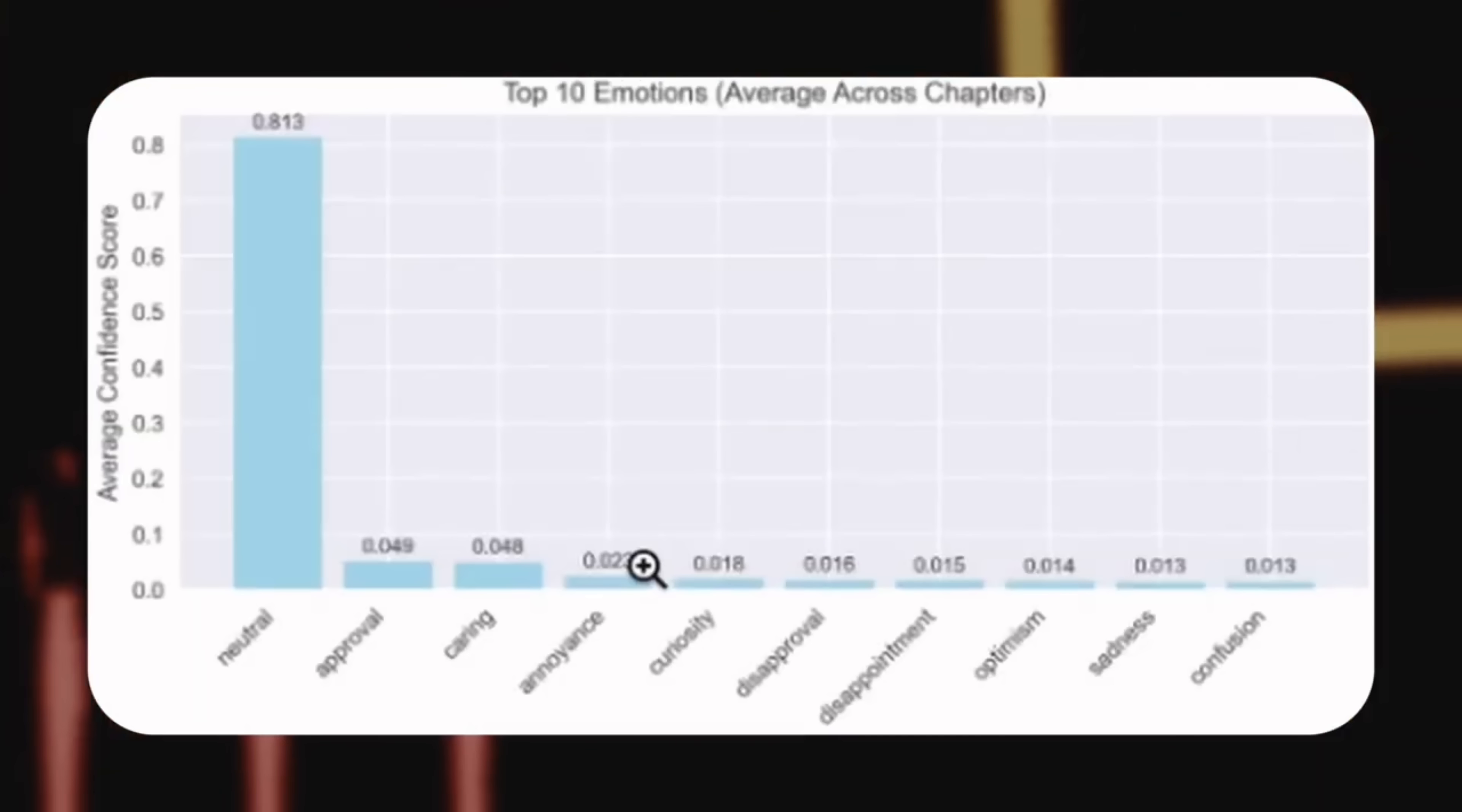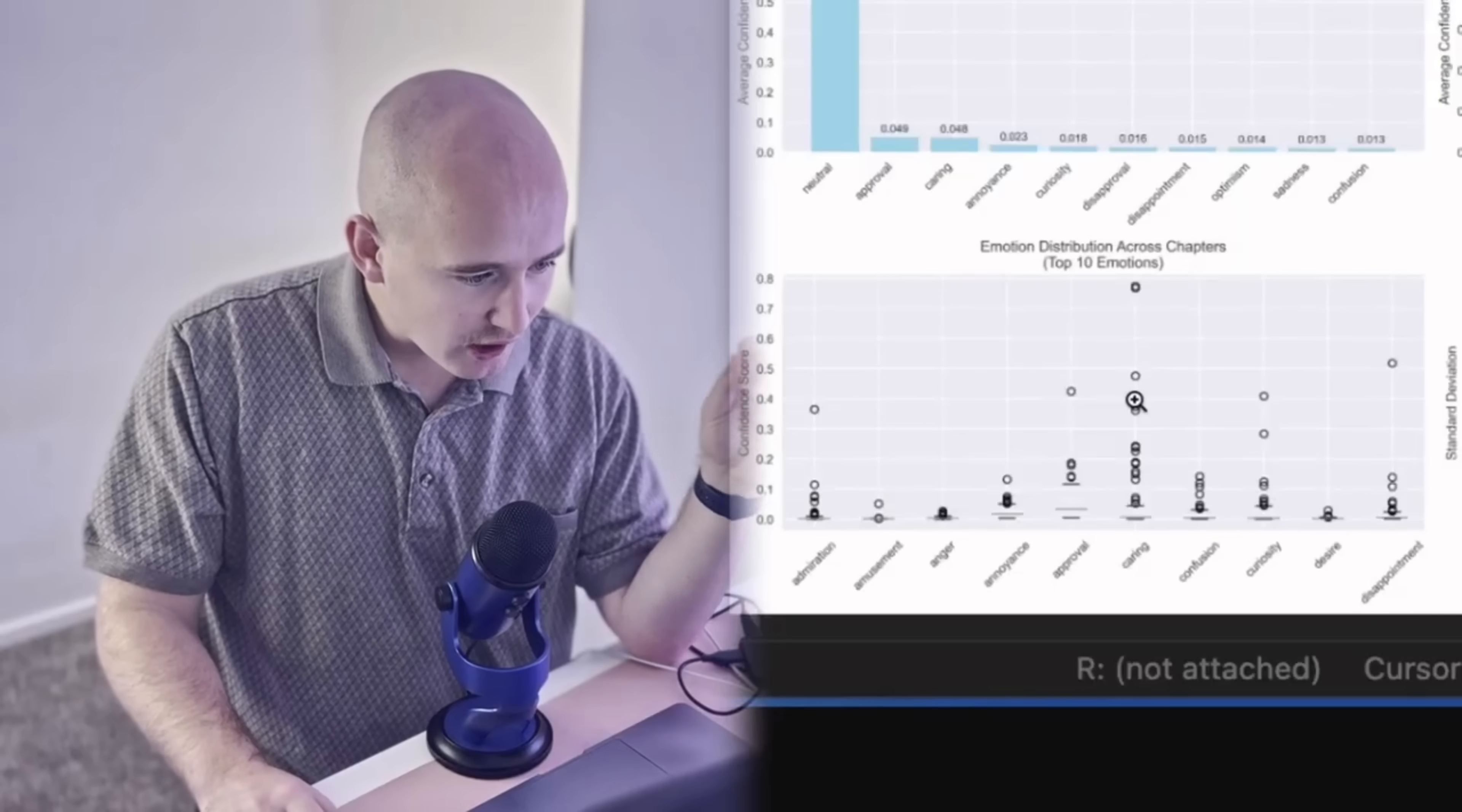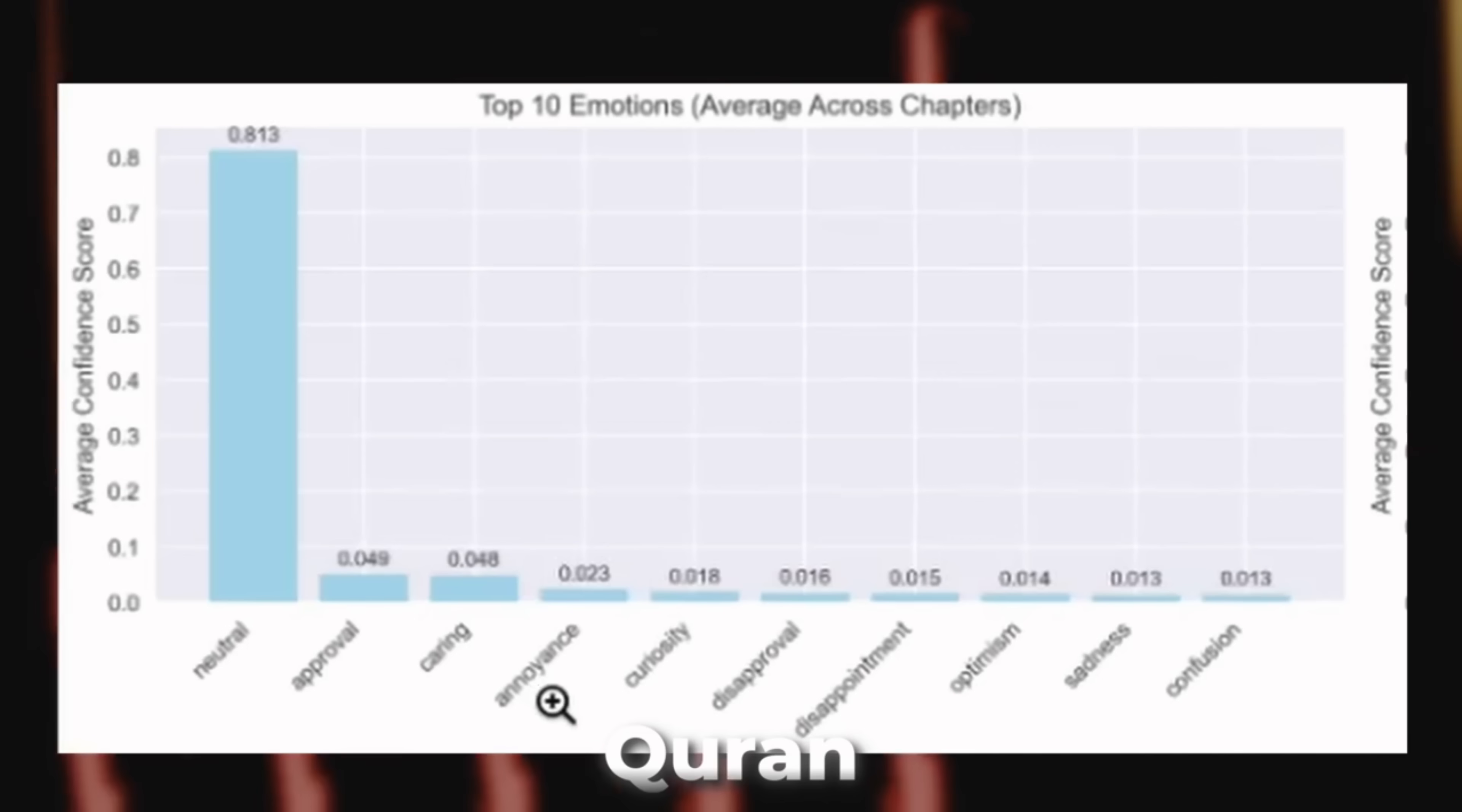And so let's first look at the Quran. So we aggregated all of the verses together. And the number one emotion that we got was neutral. And this is just due to a lot of these verses not being as simple as I love or hate my mom. It's a lot of narrative texts or thus saith the Lord texts. But we can see down here on this graph that there are some outliers that we'll take a look at in a little bit. But after neutral, the next emotions in the Quran are approval, caring, annoyance, and curiosity.